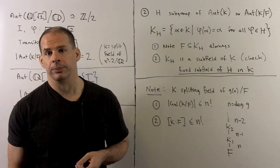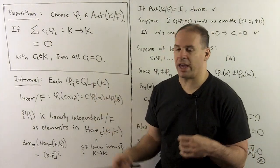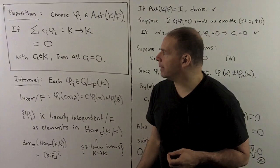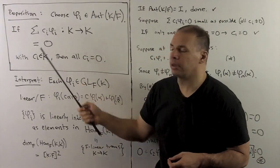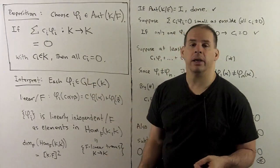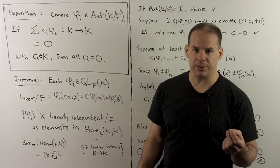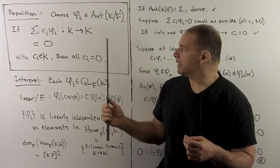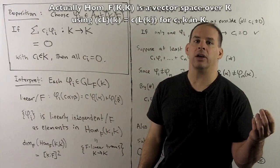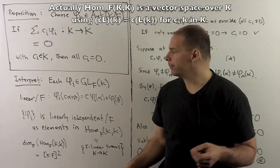As a first step toward the inequality, we have the following proposition. We choose any number of distinct automorphisms of K fixing F — call those φᵢ. We consider linear combinations of the φᵢ with coefficients in K. These linear combinations in general are not going to be automorphisms; they'll just be maps from K back to itself. And if we assume that a linear combination equals zero, we must have that all the coefficients are zero themselves.